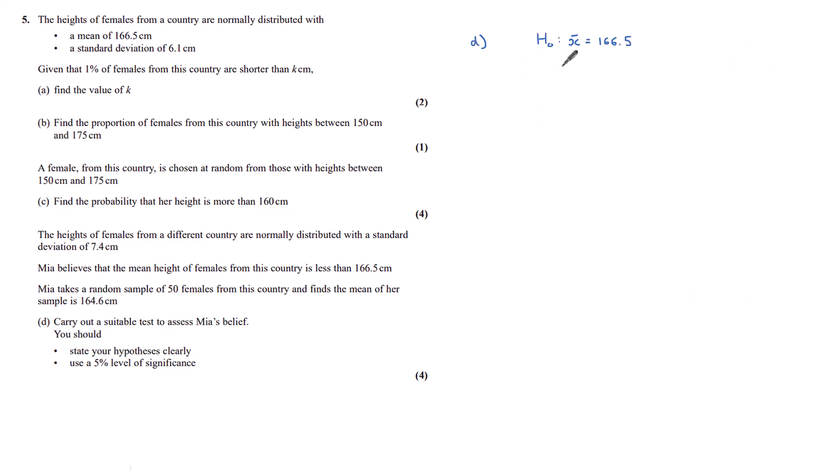So firstly, we have our original mean to be 166.5. So our null hypothesis is that our mean is 166.5. Mia supposes that the mean is less than 166.5, so that is the hypothesis we wish to test. We have a normal distribution here again of 50 females. Our mean is assumed initially to be 166.5. And our variance is found by our standard deviation squared divided by the number we are looking at. So we've got 7.4 squared divided by 50 as our variance.